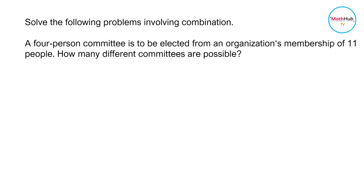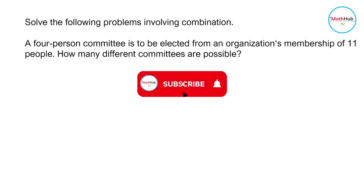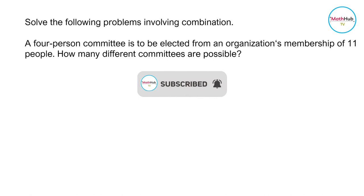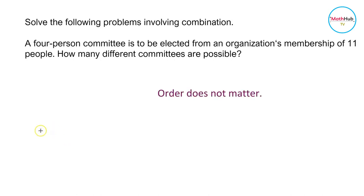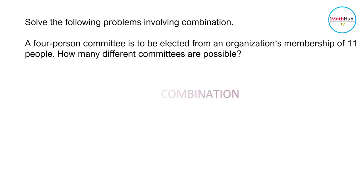Consider the following problems involving combinations. A four-person committee is to be elected from an organization's membership of 11 people. How many different committees are possible? Notice that in this problem, the order does not matter. We are just asked to select four persons from 11 people, and there's no designation between any of the persons involved in the committee. Therefore, this is an example of a problem involving combination.